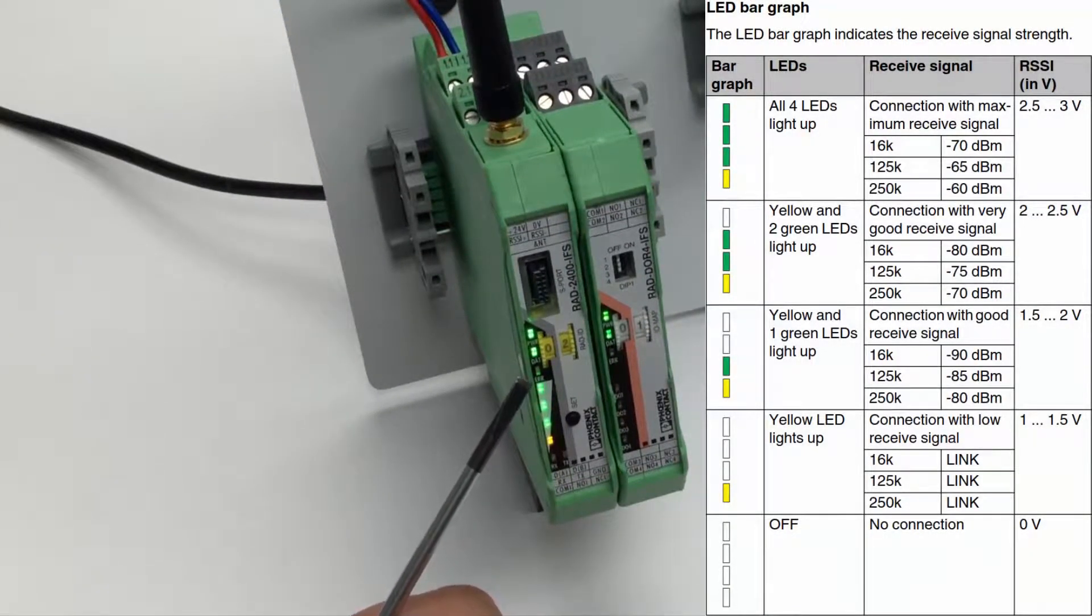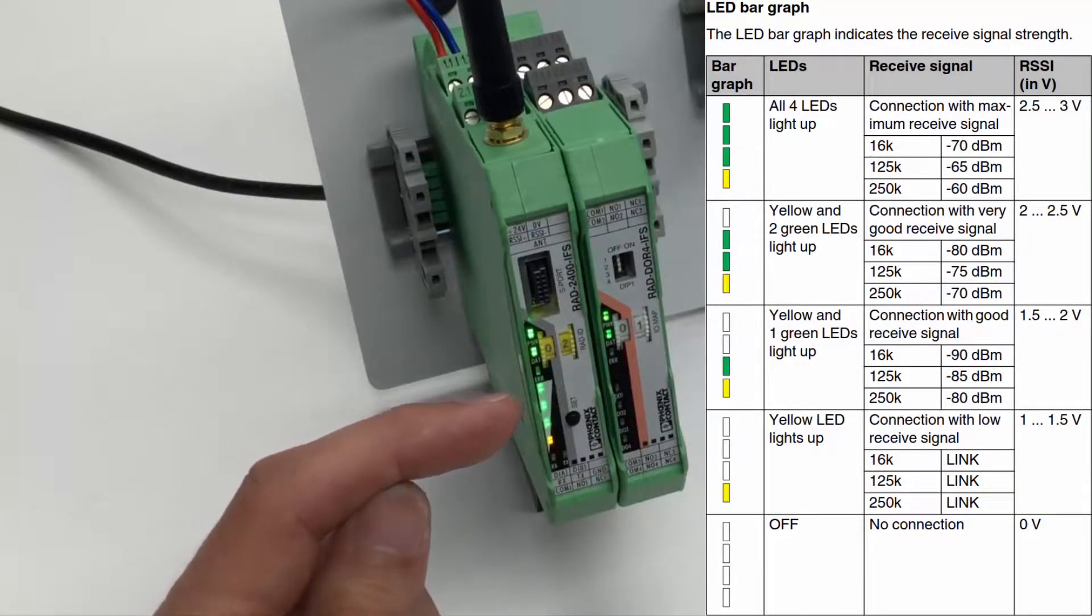A wireless link will now be established. The bar graph is indicating the wireless signal strength. The bar graph contains four LEDs, beginning with a yellow link LED and three green LEDs on top. The more green LEDs illuminated, the stronger the wireless signal strength.